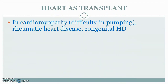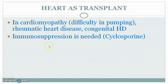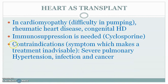The next topic is heart transplant. Heart transplant is usually done in cases of cardiomyopathy — cardio means heart, myo means muscles — meaning weakness in the pumping muscles of the heart. It is also done in cases of rheumatic heart disease and congenital heart disease. Immunosuppression is needed because the heart is highly vascular and exposed to the immune system of the recipient. Cyclosporine is mostly used for immunosuppression.